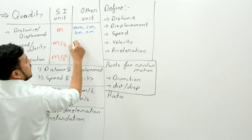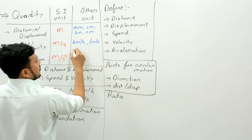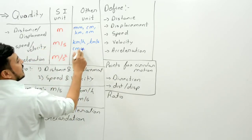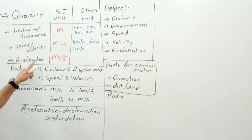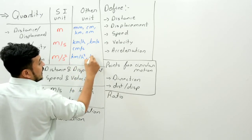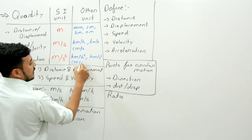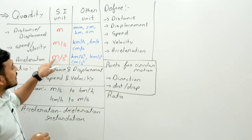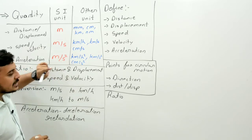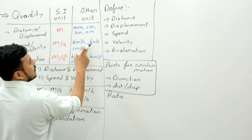Another unit for speed and velocity can be kilometer per second or centimeter per second. Any distance unit in any time unit can be placed at numerator and denominator respectively. The other units of acceleration can be kilometer per second square or centimeter per second square — for example, kilometer per hour square, kilometer per second square, centimeter per second square, same as for speed and velocity.